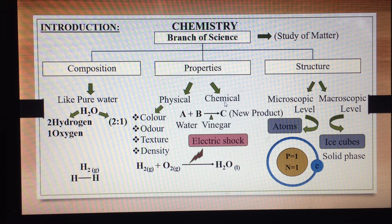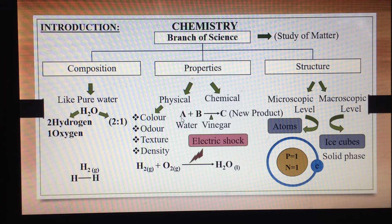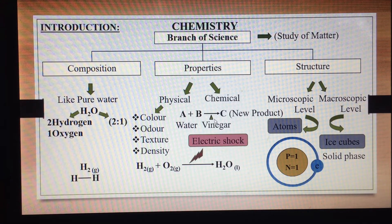Second hoti hain chemical properties. Ismein aap ek matter ko doosre matter ke saath rakh kar dekhte hain. Aur joh nayi cheez produce hoti hai, usse product ka naam diya jata hai. For example, substance A is water. When it reacts with substance B, which is vinegar here, a new thing is formed, which is called C, a product. This reaction takes place only when some condition like heat, temperature and pressure is given to the system.